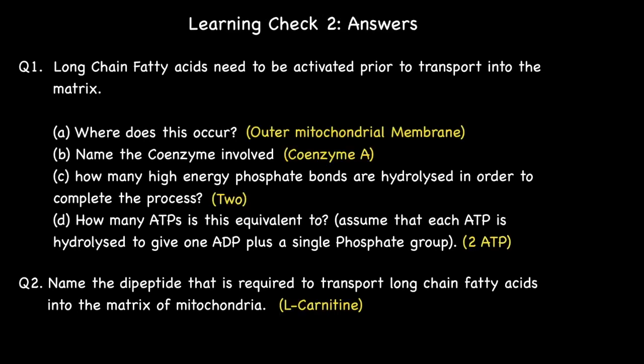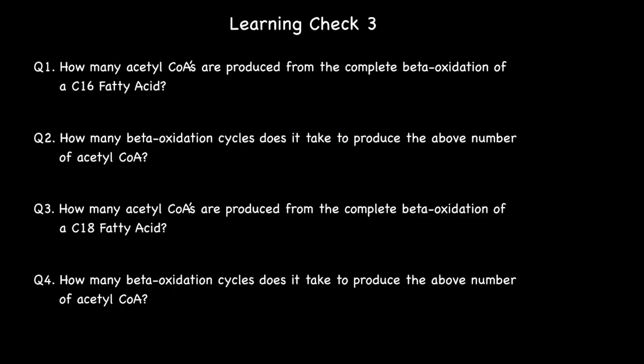Here are the answers to learning check number two. Let's now move on to learning check three. Question one: how many acetyl-CoA's are produced from the complete beta-oxidation of a C16 fatty acid? Question two: how many beta-oxidation cycles does it take to produce the above number of acetyl-CoA's? Question three: how many acetyl-CoA's are produced from the complete beta-oxidation of a C18 fatty acid? Question four: how many beta-oxidation cycles does it take to produce the above number of acetyl-CoA's? Pause the video and come back for the answers.